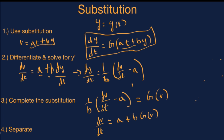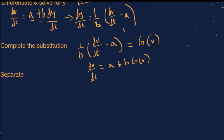When we complete the separation, we get 1 over (a plus b times g of v) dv is equal to dt. And finally, we can integrate both sides and then back substitute and solve the equation in terms of y.